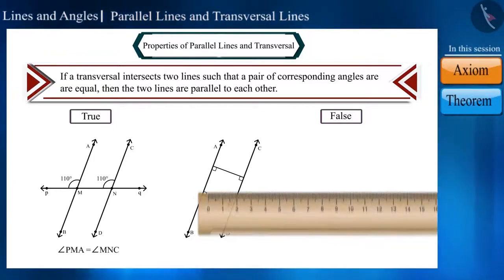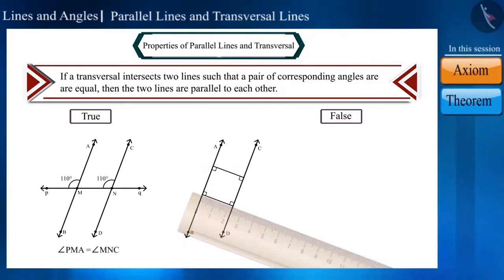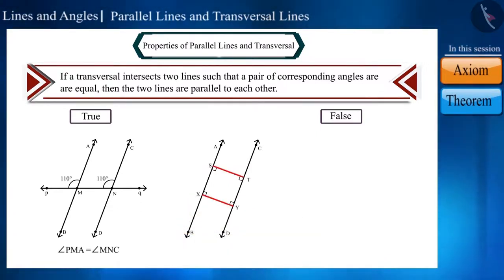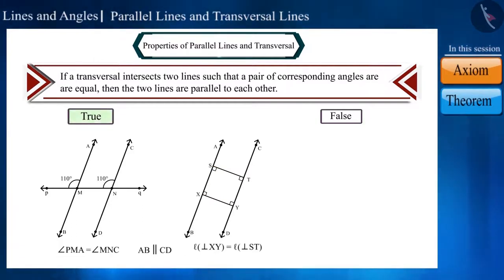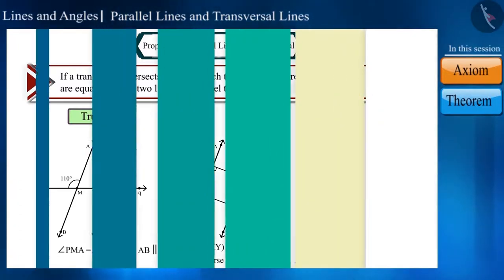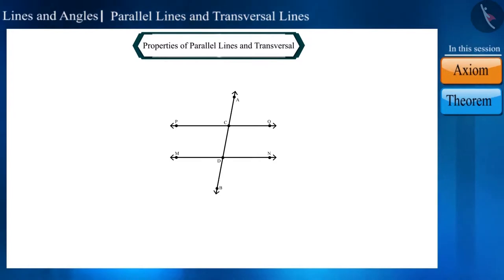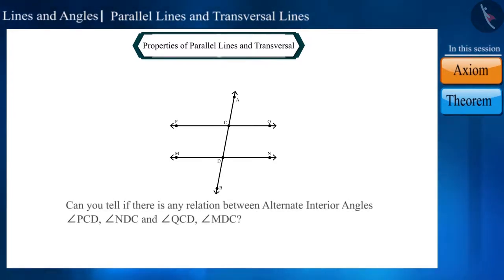We can also measure the distance between line AB and line CD by making a common perpendicular on them. These lengths are equal at each place. That is why we can see that these lines are parallel. Therefore, the given statement is true, and we call this the converse of corresponding angles axiom. Similarly, can you tell if there is any relation between alternate interior angles formed by the intersection of two parallel lines by a transversal?